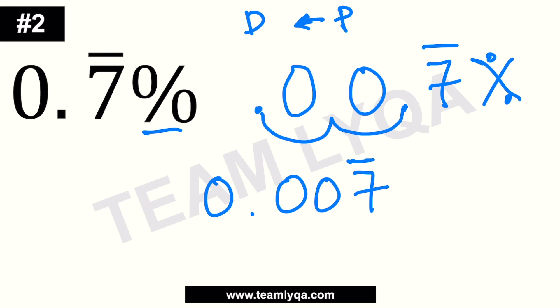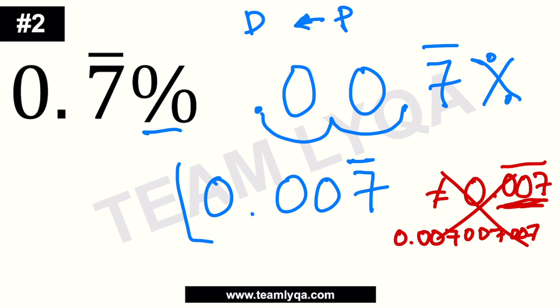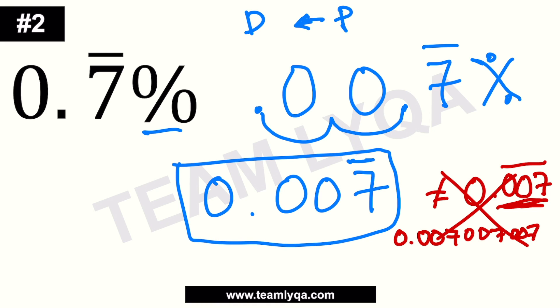Very important: this is not the same as 0.007 with the bar over everything — 0.007, 0.007 repeating the full sequence. Why? Because the number in red on the right side, when written out, looks like 0.007007007... repeating the full group. It has to be just the 7 that has the bar — only the 7 repeats.